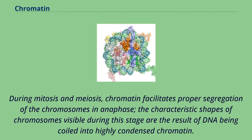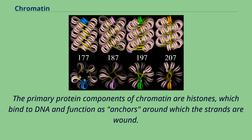During mitosis and meiosis, chromatin facilitates proper segregation of the chromosomes in anaphase. The characteristic shapes of chromosomes visible during this stage are the result of DNA being coiled into highly condensed chromatin. The primary protein components of chromatin are histones, which bind to DNA and function as anchors around which the strands are wound.